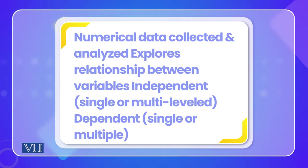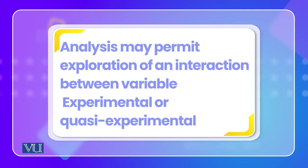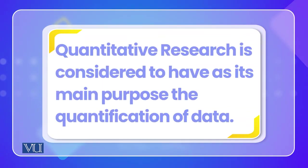One variable is independent — which can be single or multi-level — and one is dependent, which can also be single or multiple. These allow us to examine the interaction between variables, and analysis in quantitative research is conducted accordingly. Research designs can involve experiments or quasi-experiments.